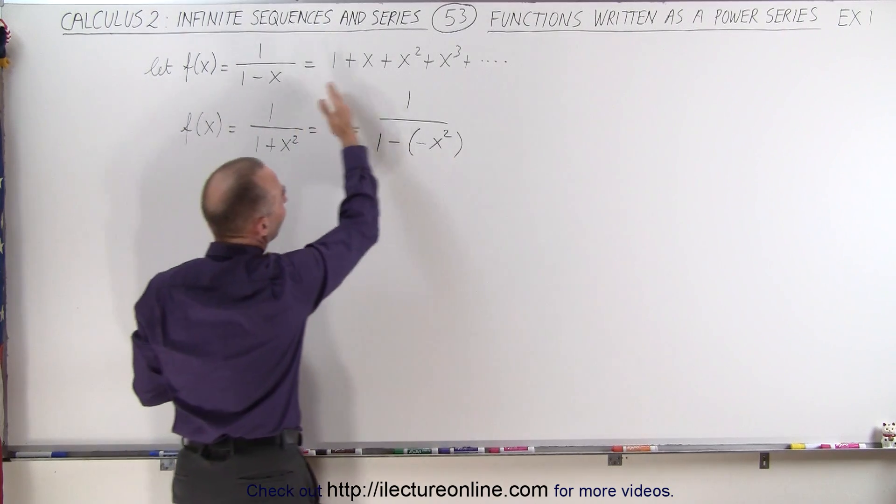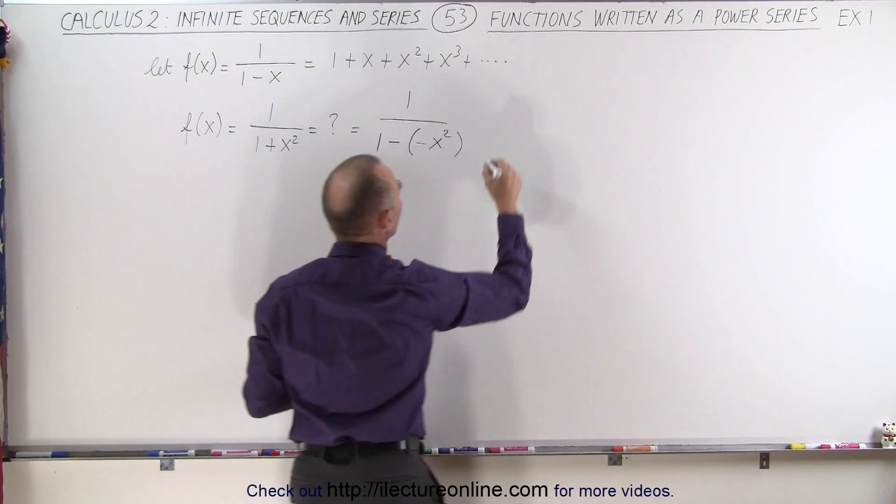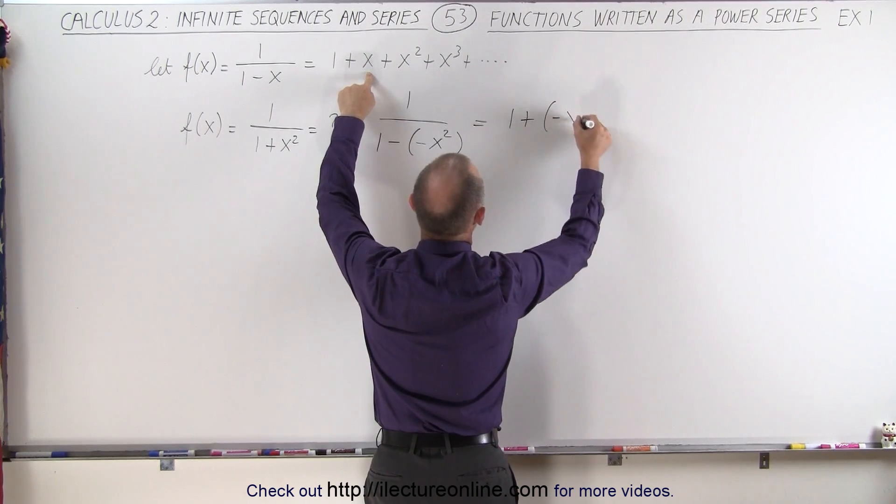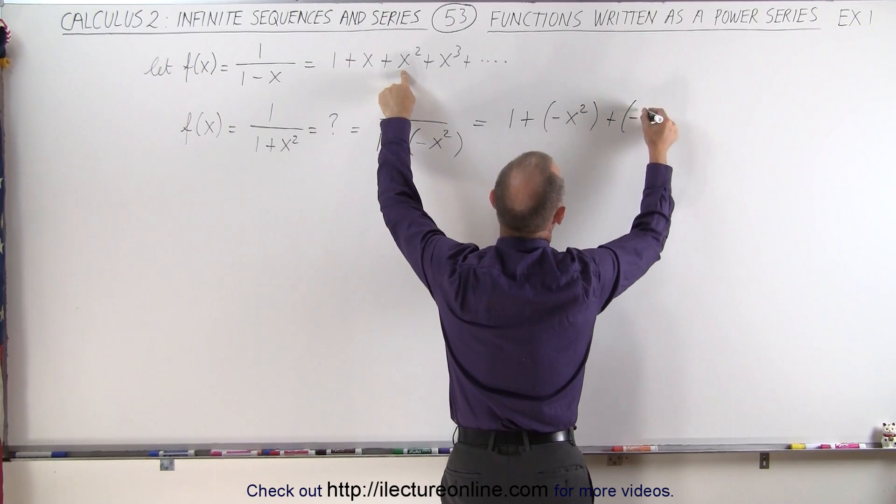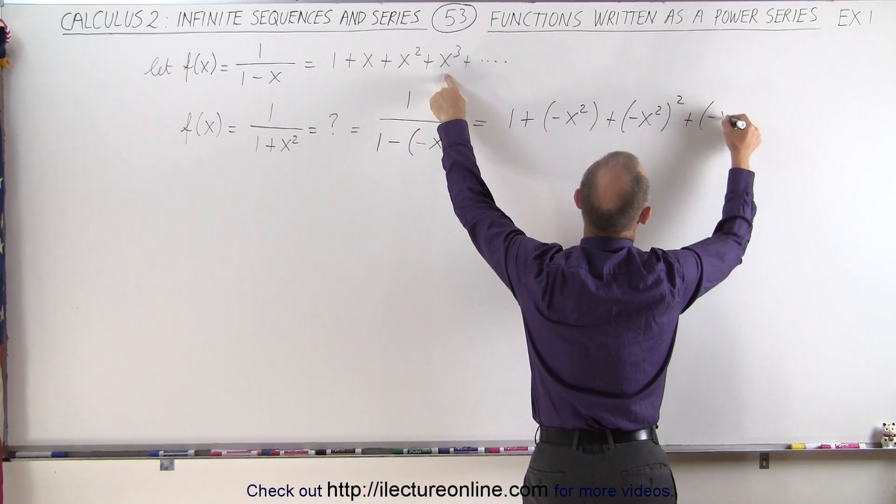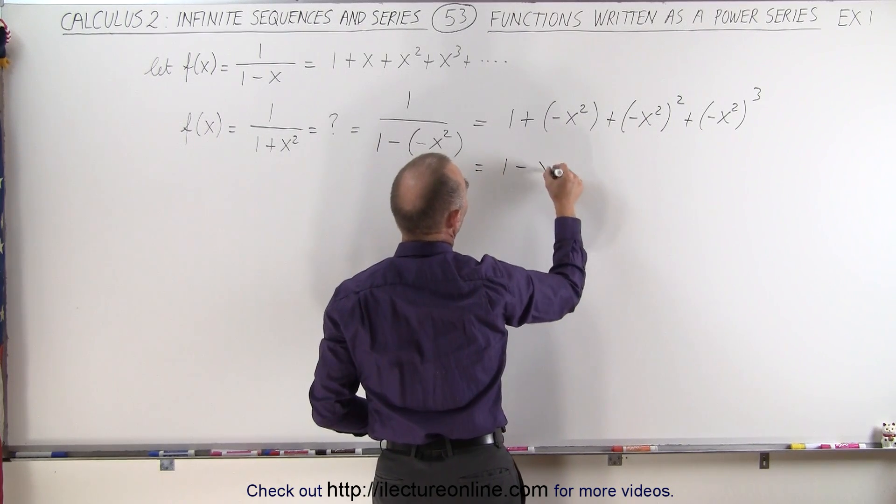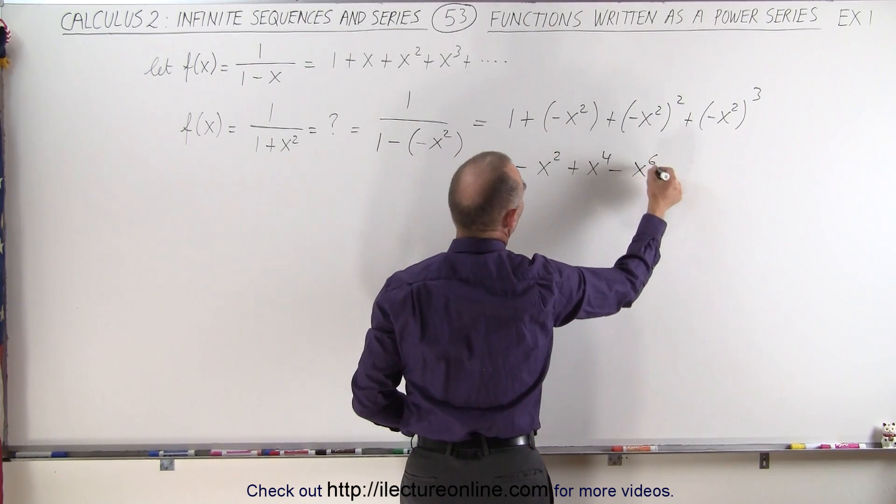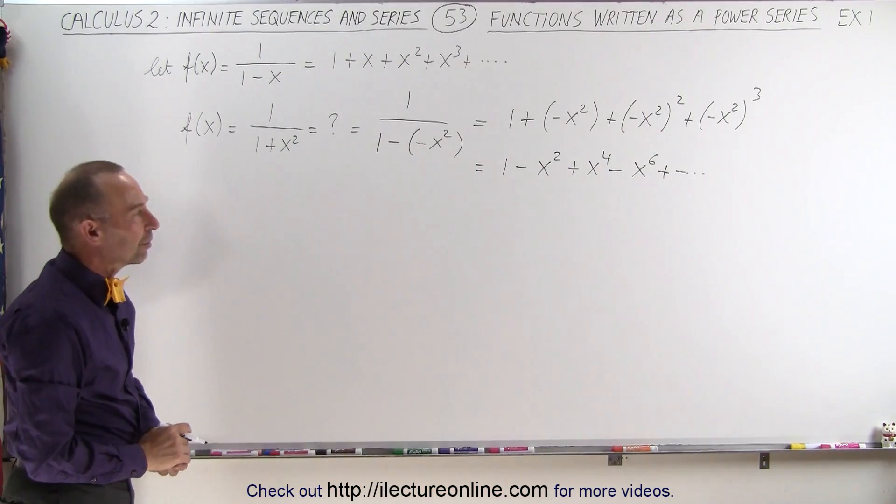All we have to do now is write out the very same thing, but instead of x here we're going to write minus x squared. So this is equal to 1 plus, instead of x we write minus x squared, plus minus x squared quantity squared, plus minus x squared quantity cubed. So this then becomes 1 minus x squared plus x to the fourth minus x to the sixth and so forth up to infinity when n becomes infinity.